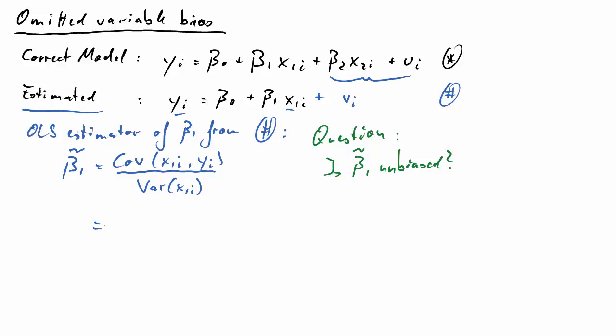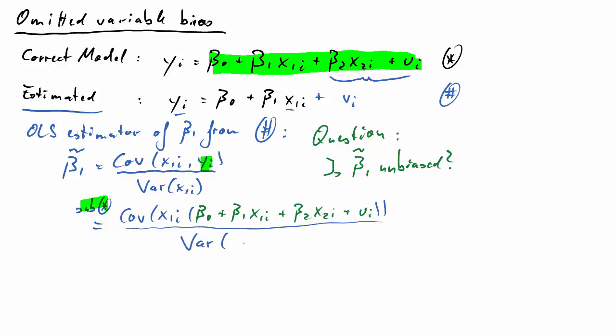As usual, we will start investigating a question like this by substituting for yi in our formula for beta 1 tilde. We substitute from the correct model, because that is how y is related to x1 and x2. We get this equation. Now we have a covariance of many terms, the first one being x1 and beta 0, then x1 and beta 1 times x1, and so forth.